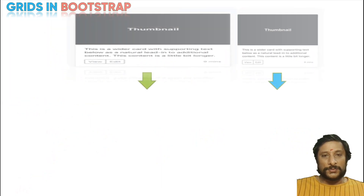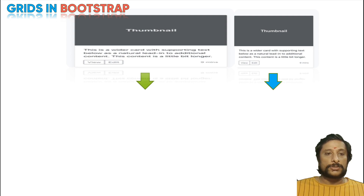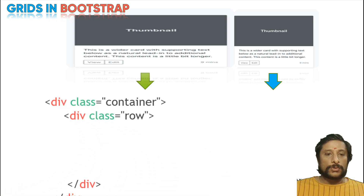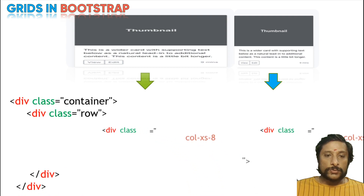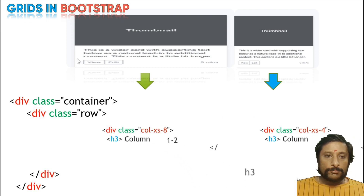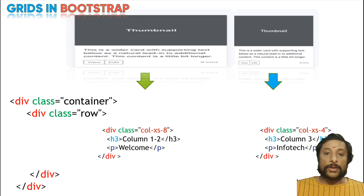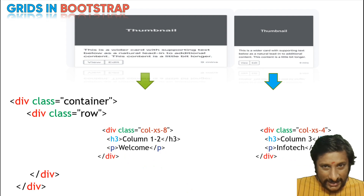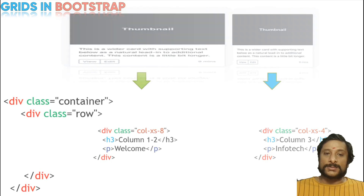You can also have uneven columns — for example, 8 versus 4. You have your container and row as usual. Under that, the length is 8 and the length is 4. Whatever design you want, divide it into 12 and use it — that is how your Bootstrap works.